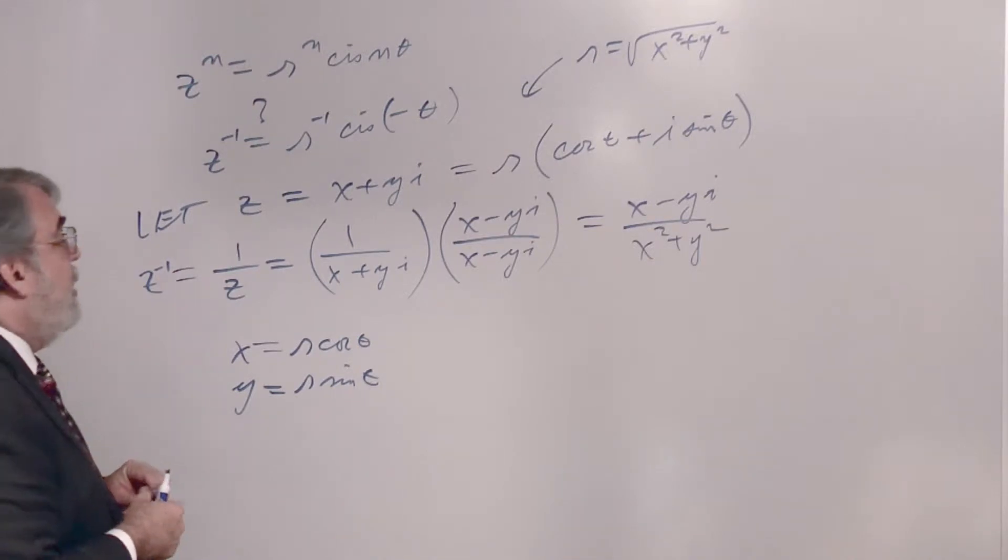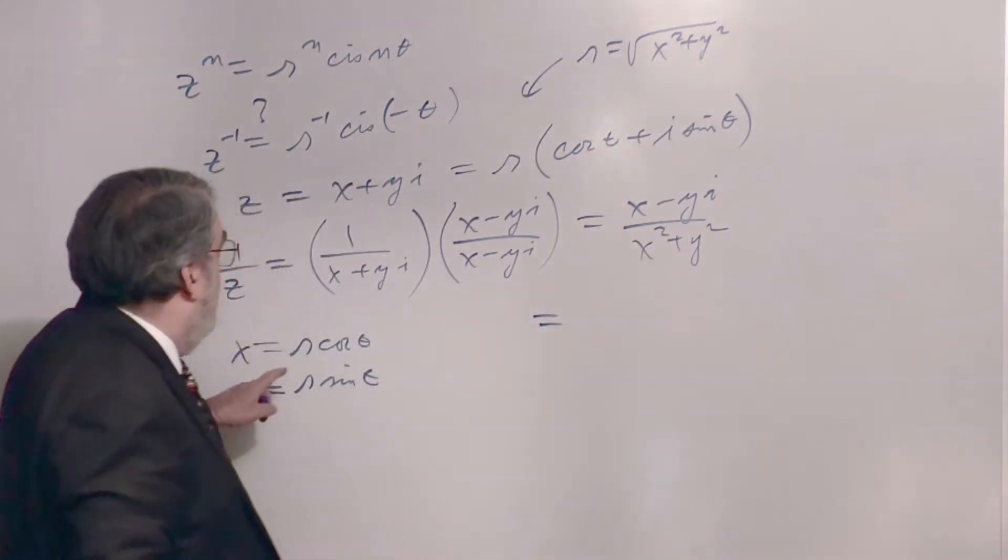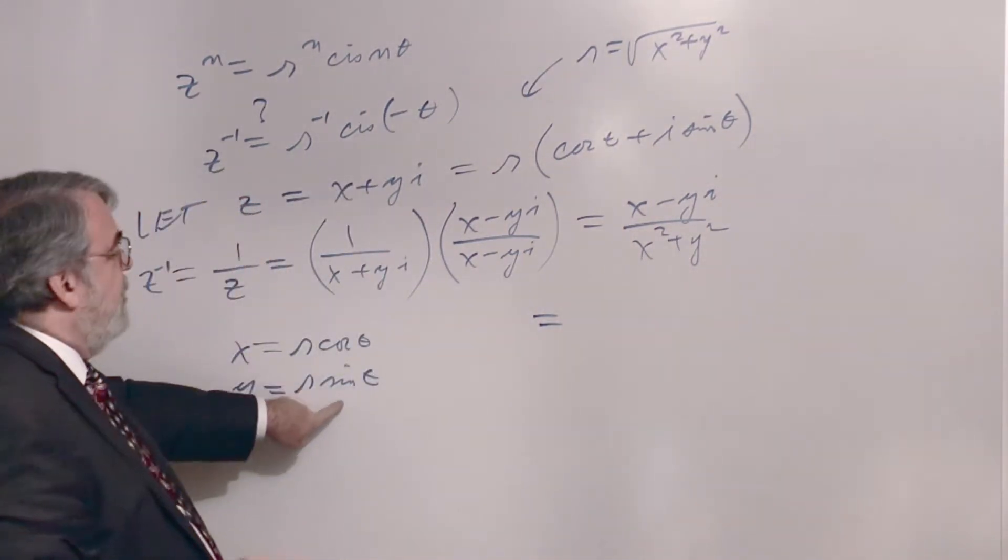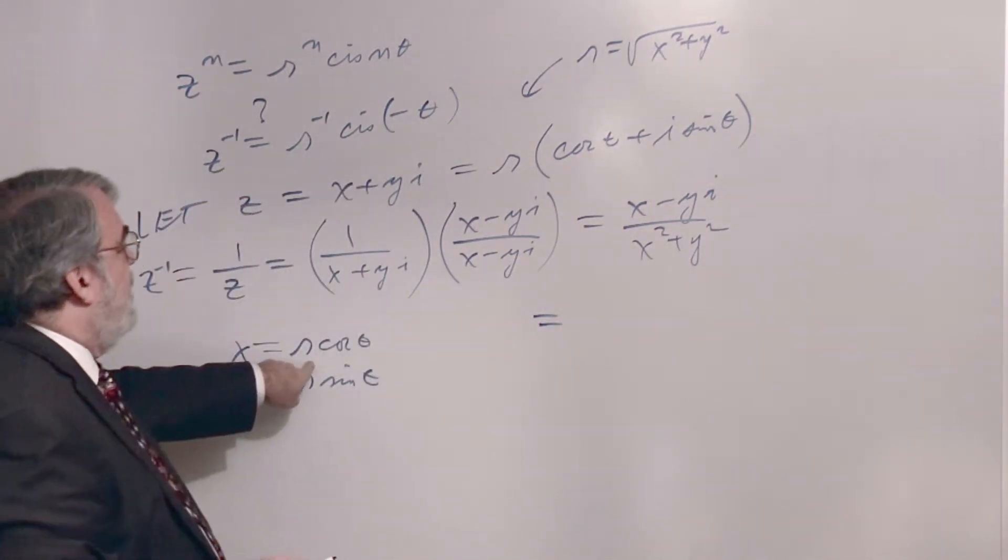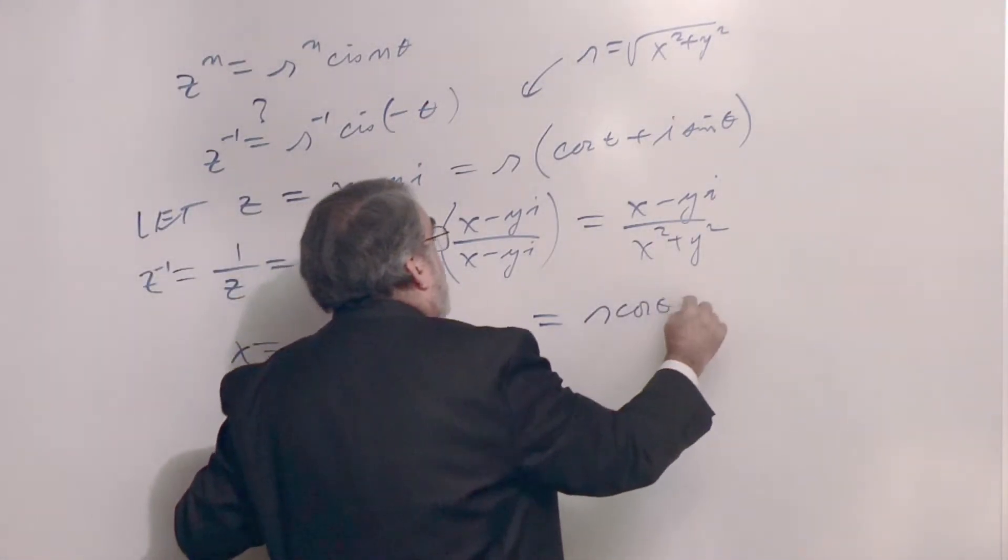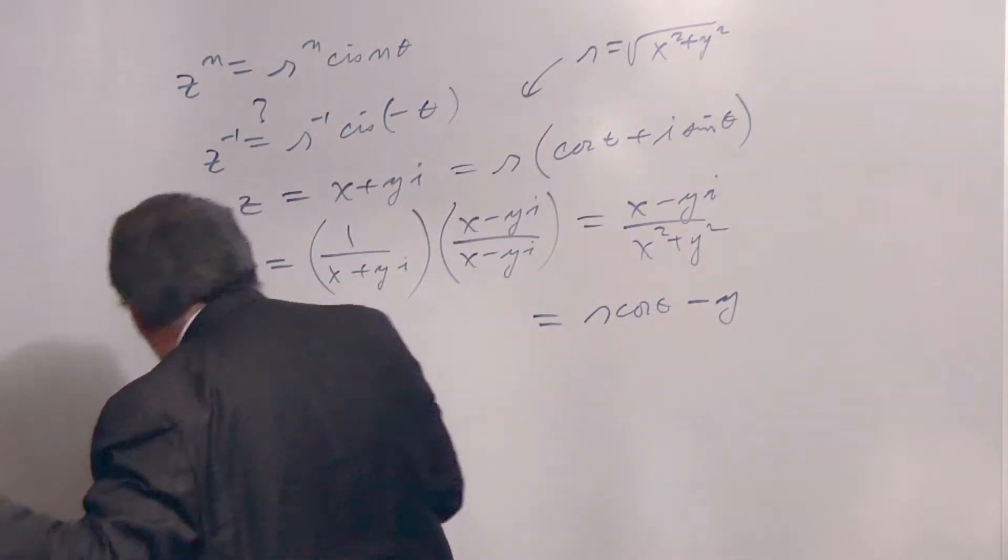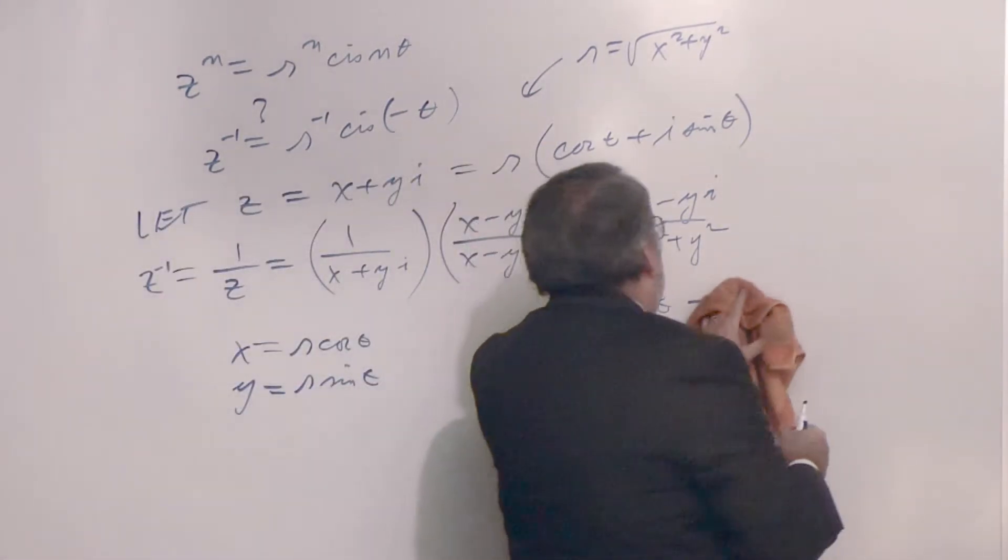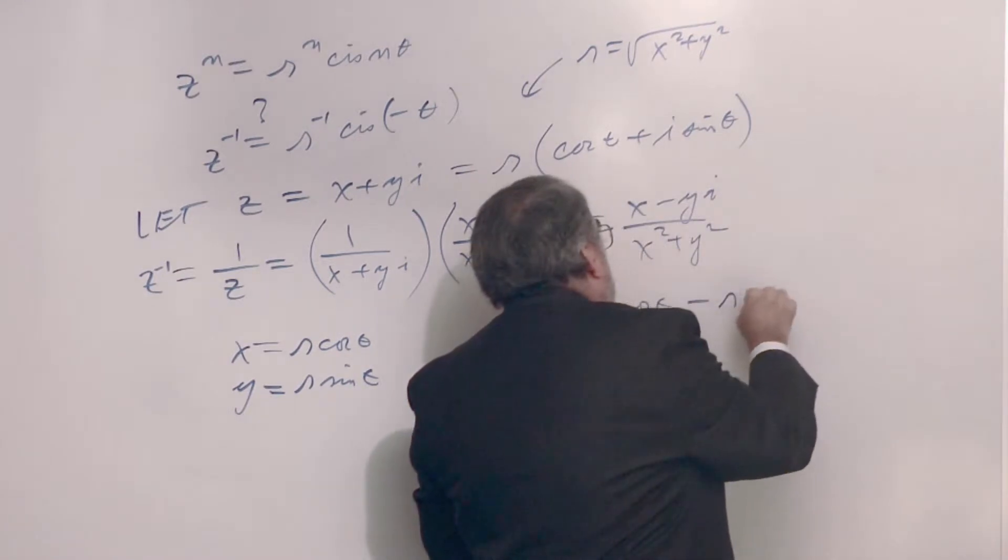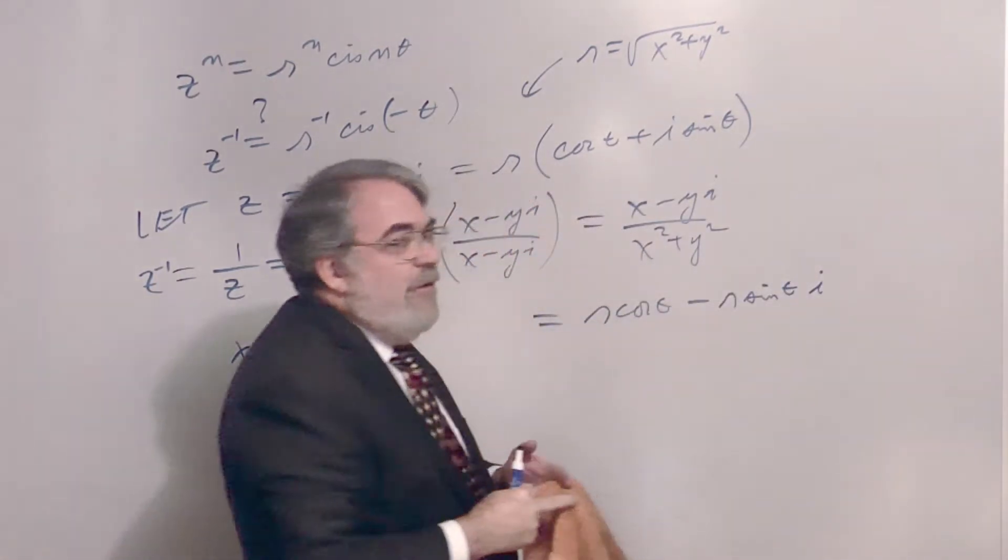So, up here, I've got x minus yi. I'm just going to replace x and y with this stuff here. And the numerator, I've got r cosine theta, r cosine theta minus y. I'm sorry, minus, y is r sine theta, minus r sine theta. And then, I've got imaginary unit i.